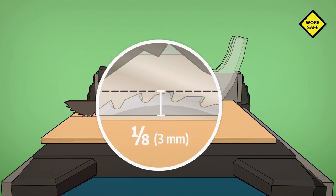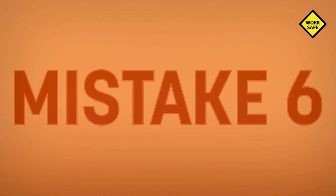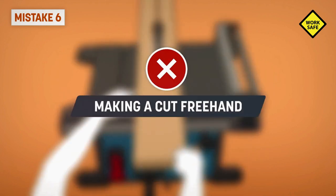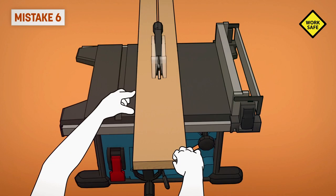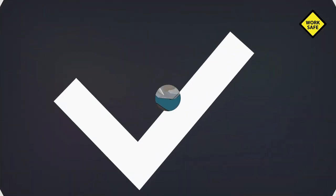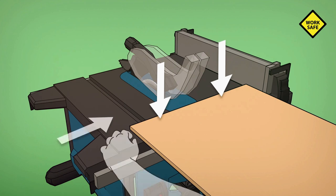Mistake six: making a cut freehand. To avoid making a crooked cut and causing binding and kickback, always hold the workpiece firmly against the table and the fence during the cut.